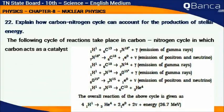Explain how carbon-nitrogen cycle can account for the production of stellar energy. The following cycle of reactions takes place in carbon-nitrogen cycle in which carbon acts as a catalyst. H11 plus C612 gives N713 plus gamma.